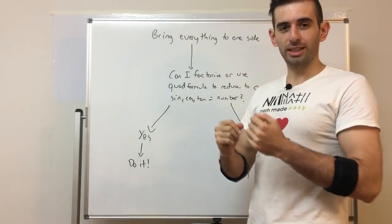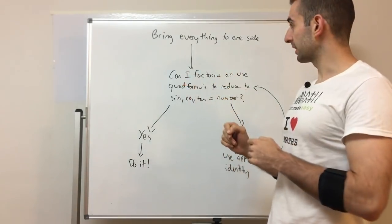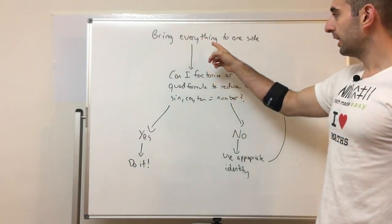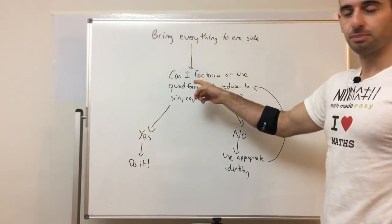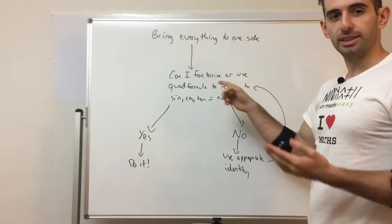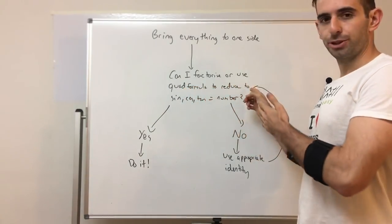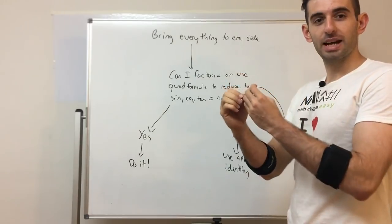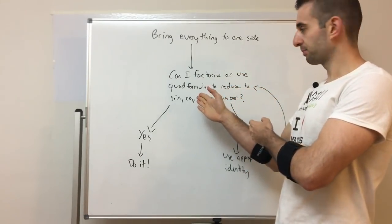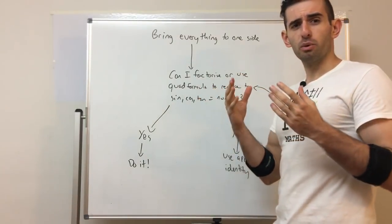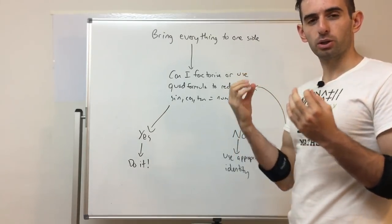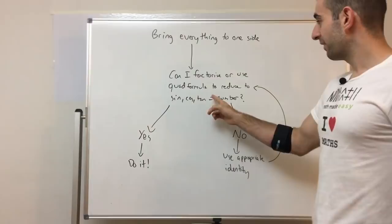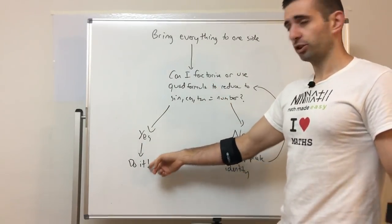What we want to do first is bring everything to one side. Then ask yourself: can I factorize or use the quadratic formula to reduce it down to sine, cos, or tan equals a number? Because if I can do that, we're done — we can use the calculator. Most of these you'll be able to factorize or they turn into a quadratic equation solvable with the quadratic formula.